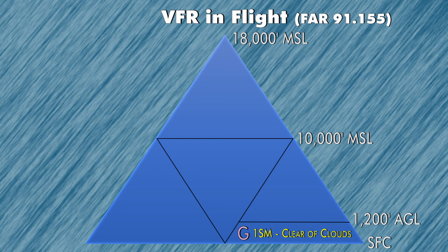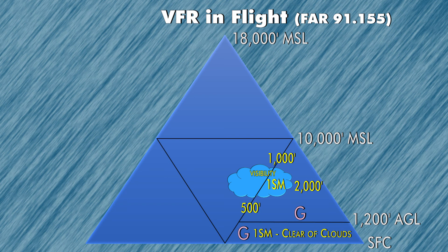Our next section above that is Class Golf airspace starting at 1,200 feet AGL and up to 10,000 feet MSL. In that area, you need at least one statute mile of visibility, just like the Class Golf below. You also have to be at least 1,000 feet above, 500 feet below, and 2,000 feet away horizontally from clouds.